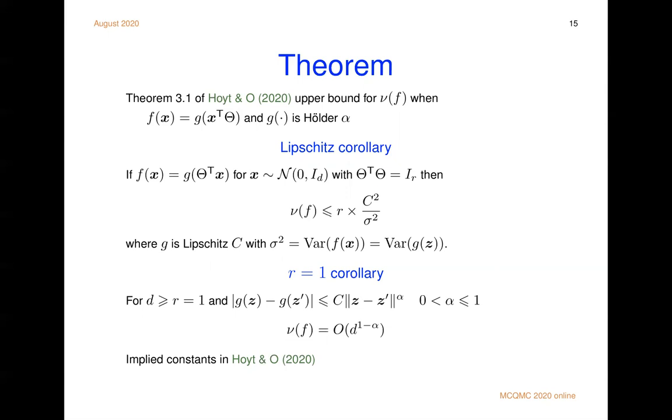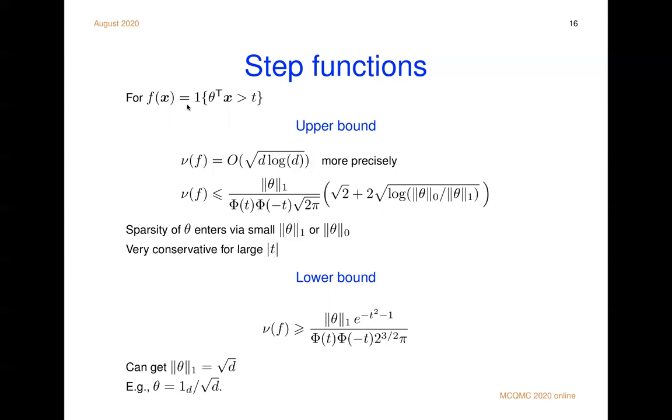Well, now let's take a look at the step function. So the step function, it's just 1 if theta transpose x is above the threshold, and we work out that the upper bound for the mean dimension is like square root of d log d. And we can do a little bit more precise. Where does that come from? Well, it has in it the L1 norm of the vector theta.